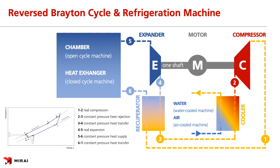Air cycle is based on the reversed Brayton cycle — see the TS diagram in the left bottom corner. The refrigeration machine schematic is linked with the TS diagram by working points 1 to 6. The most important for us today is the process between point 5 and 6, which is called constant pressure heat supply. Air is either supplied directly to the cold chamber, which is the open cycle principle, or is supplied to an additional heat exchanger where it cools down another medium, which is the closed cycle principle.